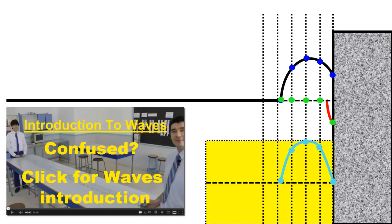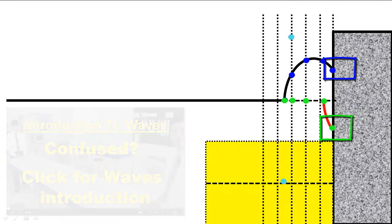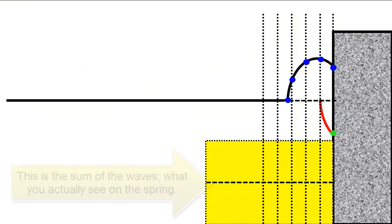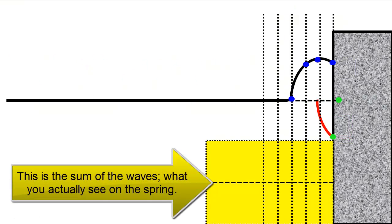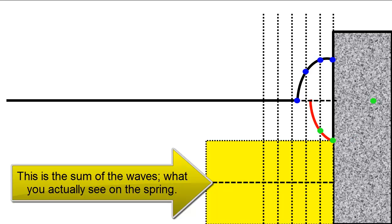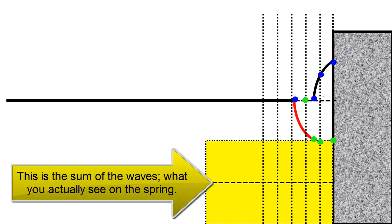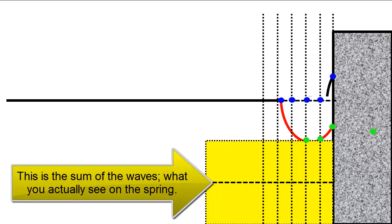At the end there you can see you've got a positive value for the blue dot and a negative value for the green dot, so they subtract and essentially cancel each other out. As the wave progresses you're getting more and more cancellation and the sum of the waves that you actually see on the spring gets smaller and smaller until you get perfect cancellation. Then the wave seems to appear out of nowhere on the bottom and eventually you're left with the pulse which is completely inverted moving down the spring back to its origin.